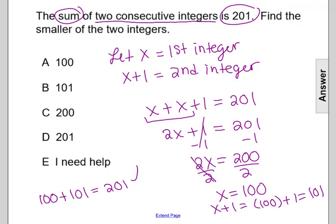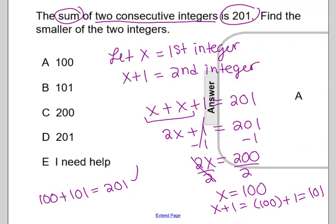So comparing 100 and 101, the smaller is going to make our answer A, 100.